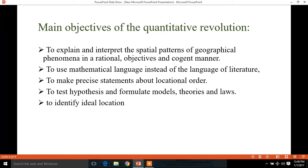Third one is to make precise statements about locational order. Fourth, to test hypothesis and formulate models, theories and laws for estimations and predictions. Fifth one is to identify ideal location in the form so that the profit may be maximized by the resource users. So these were the objectives of quantitative revolution.